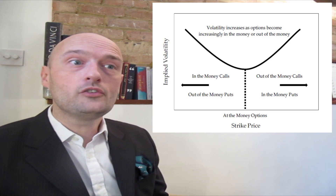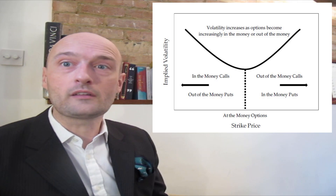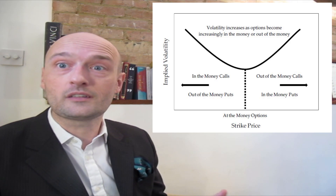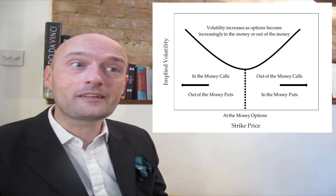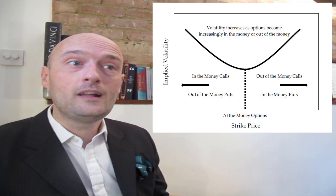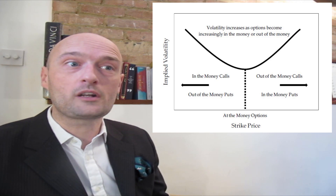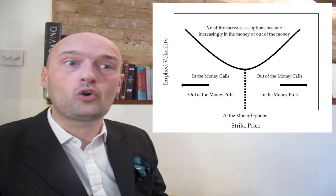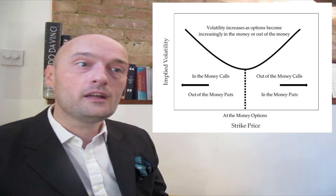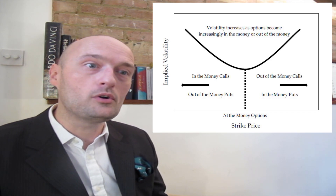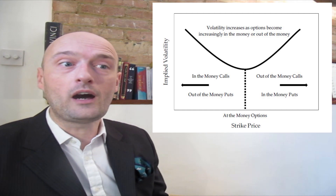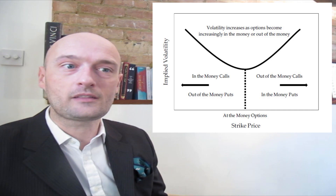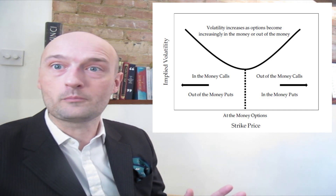On screen right now you can see a graphic showing the smile — it's called the volatility smile simply because it's the shape of a smiling face. As you can see, volatility increases as options become increasingly in-the-money or out-of-the-money. We've got in-the-money calls and out-of-the-money puts, or out-of-the-money calls and in-the-money puts, all with higher volatility than the at-the-money options.